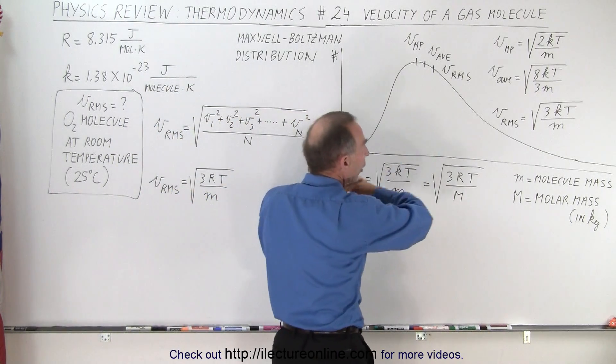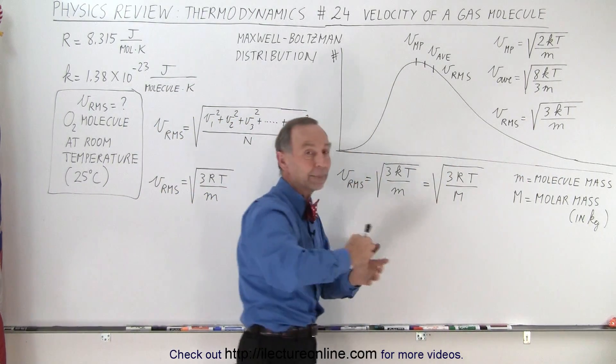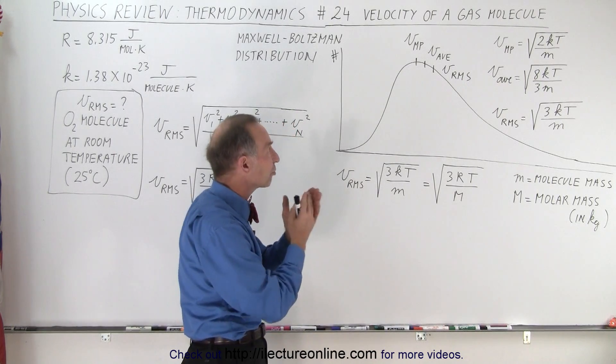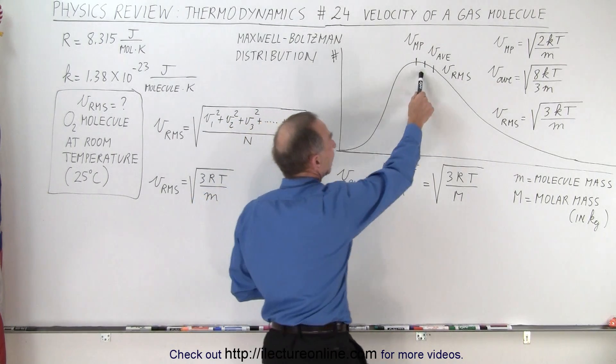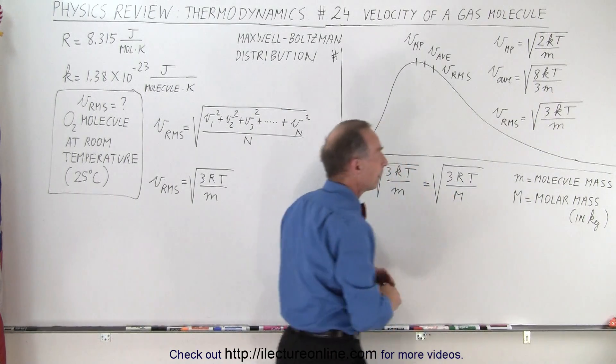Then we have the average speed. If we take all the speeds, sum them all up, divided by the number of molecules, we get the average speed of a molecule. And that can be calculated to be the square root of 8 over 3 times kT over m.